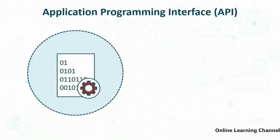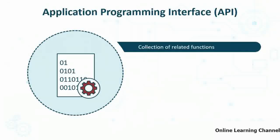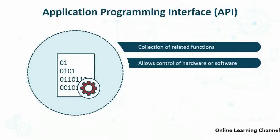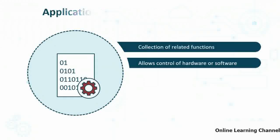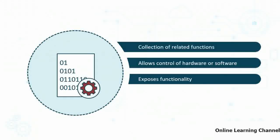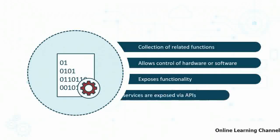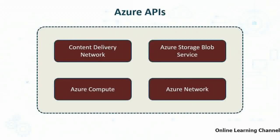In computer programming, an API — application programming interface — is a collection of related functions that allows control of a hardware or software solution. In Azure, APIs expose functionality for Azure services. Each Azure service — such as virtual machines, storage accounts, and content delivery networks — is exposed via APIs and can be controlled programmatically. Azure APIs exist for CDN configurations, Azure Storage Blob services, Azure Compute, Azure network components, and many other items.